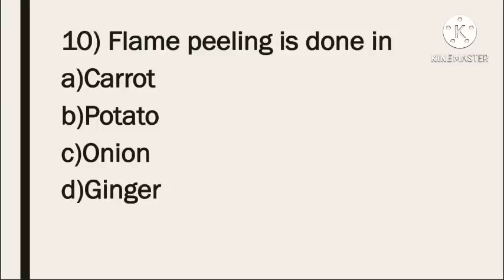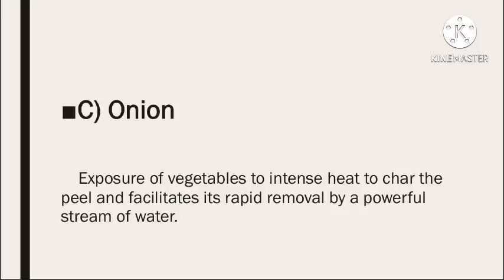Next question: flame peeling is done in — Option A: carrot. Option B: potato. Option C: onion. Option D: ginger. The correct answer is onion. Flame peeling involves exposure of vegetables to intense heat to char the peel and facilitate its rapid removal by a powerful stream of water.